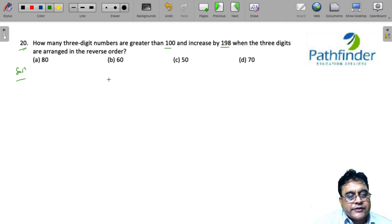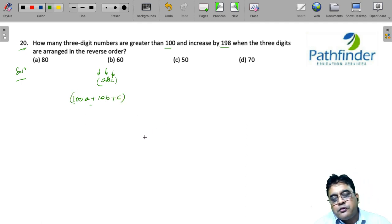a three-digit number as abc, where c is the unit digit, b is the tens digit, and a is the hundreds digit. So we have 100a + 10b + c as the value of the original number.